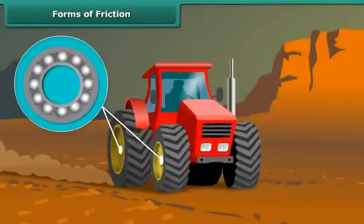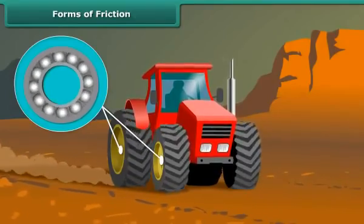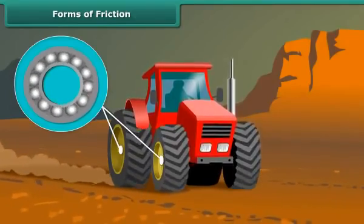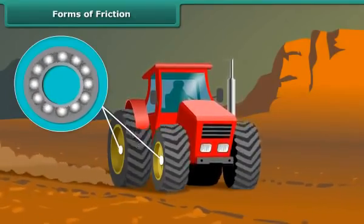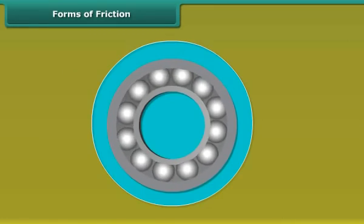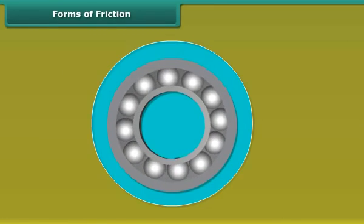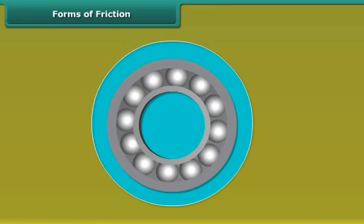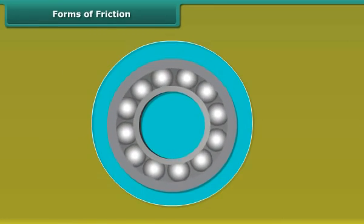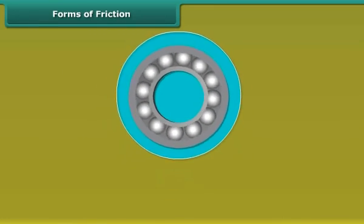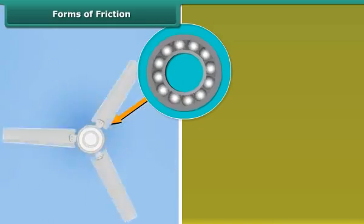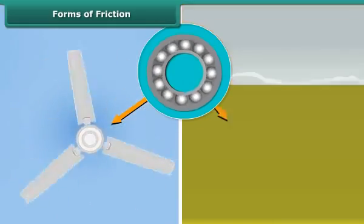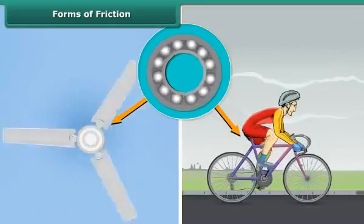This is achieved through the use of ball bearings. Common examples are the use of ball bearings between hubs and the axles of ceiling fans and bicycles.